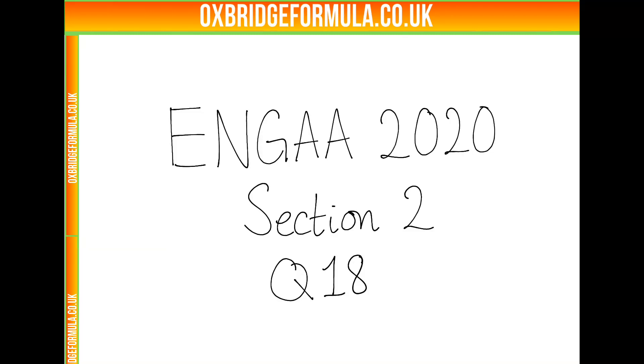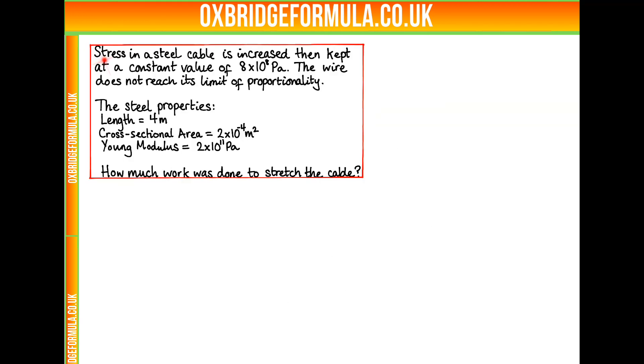This question is taken from the Enger 2020 section 2 paper, and it is question 18. Stress in a steel cable is increased, then kept at a constant value of 8 times 10 to the 8 Pascal. The wire does not reach its limit of proportionality.